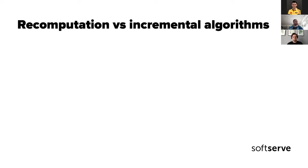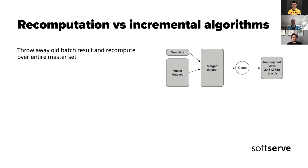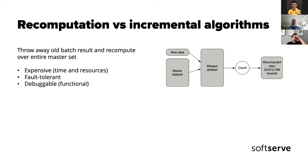Another discussion about batch processing is how we actually process the batches: recomputation algorithms versus incremental algorithms. With a recomputation algorithm, each time we get new data we merge it with all existing data and reprocess everything. This is expensive because every time we process every single piece of information — but it's fault tolerant and debuggable. We apply a function to this master dataset, and if that function was incorrectly written we can just fix it and apply it again.